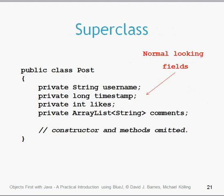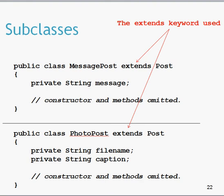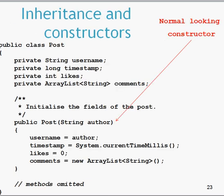The superclass, when we look at the internal code, looks pretty normal. I've omitted the constructor and methods here but the fields look similar to what we're used to. The subclasses have the `extends` keyword and their fields, which effectively get added on to the fields from the superclass. In terms of constructors, the superclass has a pretty normal-looking constructor. Everything looks the same - it takes a single parameter of type String called author.